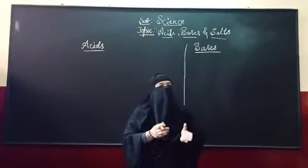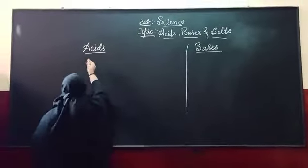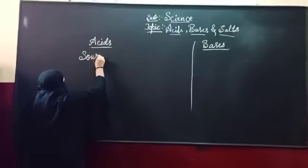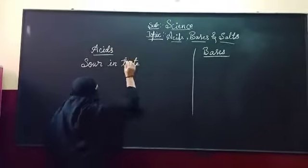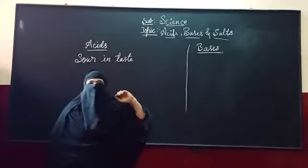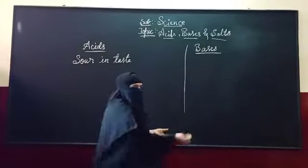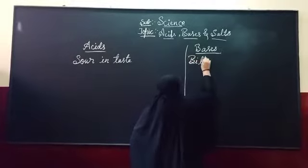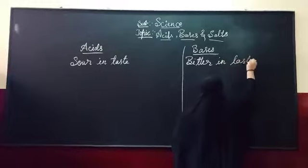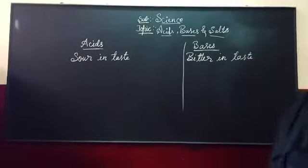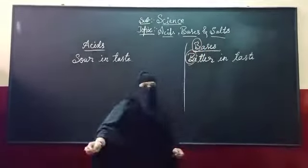Now for that we have a few differences. First difference is the acids are sour in taste. What about the bases then? The bases are bitter in taste. B for base, B for bitter. Here, you can note that this B, here it's B.